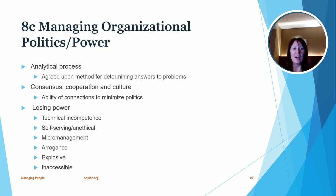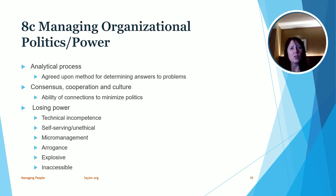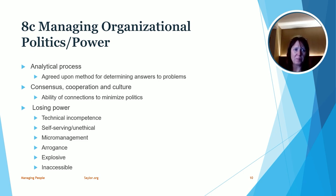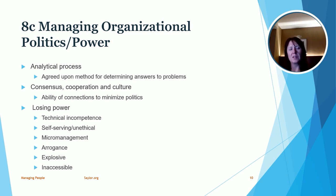One of the ways we can manage politics and power within organizations is through analytical processes — a process that's already set and agreed upon to determine answers to problems. This allows us to have a structured process that wouldn't allow people to circumvent using more negative sources of power. We can also foster a consensus and cooperation culture, focused on building relationships and connections among members so that politics isn't necessary. This method helps to build quite a bit of trust within the organization.